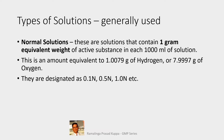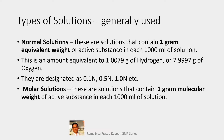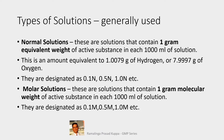However, concentrations less than 0.1N — like 0.05 or 0.02 normal — and stronger than 1 normal are also sometimes necessary. Molar solutions are solutions that contain 1 gram molecular weight of active substance in each 1000 ml of solution. For molar solutions, only the molecular weight is considered. They are designated as 0.1M, 0.5M, 1M, etc. — the same as normal solutions but with N replaced by M for molarity.